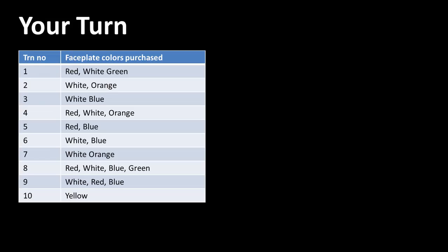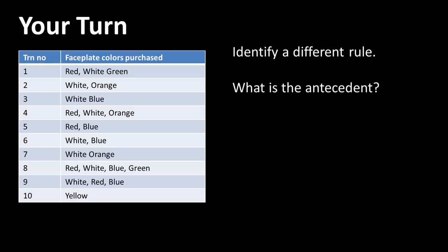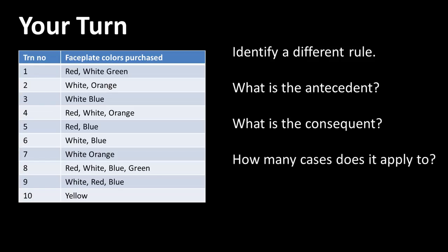So it's your turn now. Take a look at the same data set that we have. Identify some other rule, other than red implies white — any other rule that you can think of, any single rule. It doesn't have to be a good rule. Just a rule so that I want to make sure you understand what it is. Once you've identified the rule, identify what is the antecedent, what is the consequent, and also how many cases does the rule actually apply to in the data? By apply to, I mean what are all the cases in which the rule actually holds, and also what are the cases in which the rule doesn't hold?